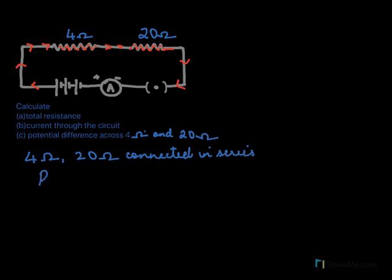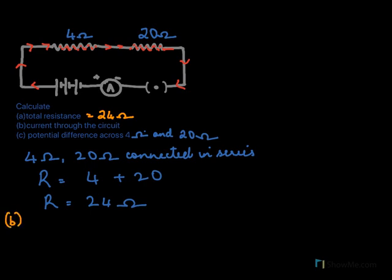Since they are connected in series, R equals 4 plus 20, so the total resistance is 24 ohms. That answers the first question. Next, to find the current in the circuit, we use Ohm's law: V equals IR.